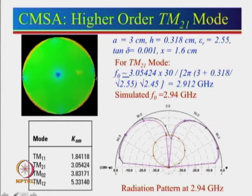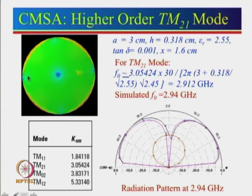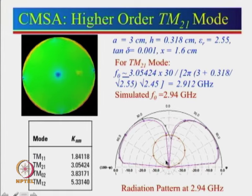The conical pattern arises because along the circumference: +, 0, −, 0, +, 0, −, 0, +. The positive field here and the positive field in the opposite direction cancel in the broadside direction — the null depth is more than 15 dB along broadside. Maximum radiation is in the conical direction. This is very useful when radiation in the conical direction is needed.